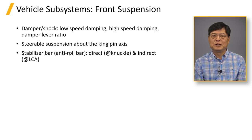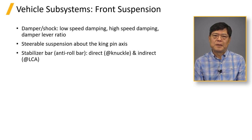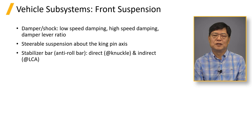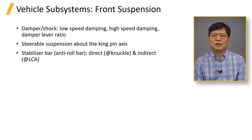The stabilizer bar is mounted on the cradle using two rubber bushings. The ends of the bar are attached to the LCA or to the knuckle through drop links. The sway bar knuckle attachment gives higher roll stiffness than the sway bar LCA attachment using the same bar. Large sway bars have a hollow cross-section with 15% wall thickness.